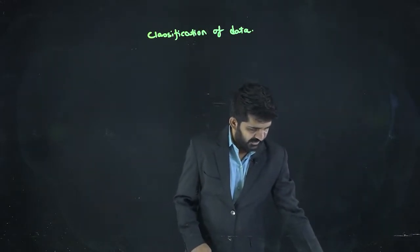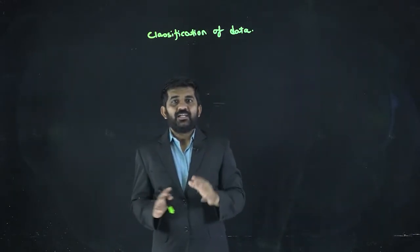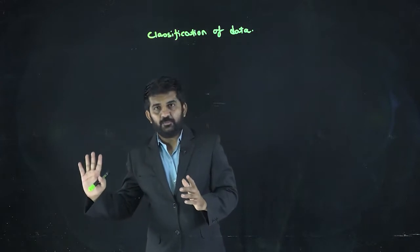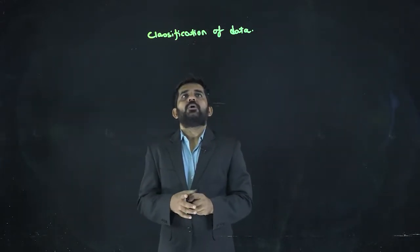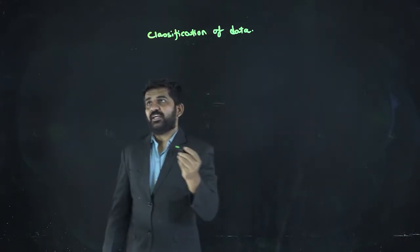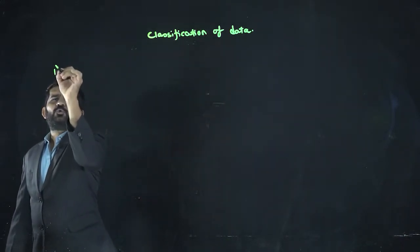We know variables are of two types: continuous and discrete. Now data, whether it is attributes or variables, whether it is quantitative or qualitative, we are going to learn classification of data. It is classified basically into two parts.